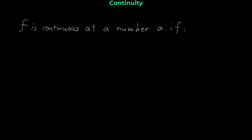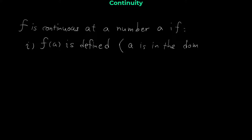We say function f is continuous at a number like a if f of a is defined. This means that the number a should be in the domain of the function f. So this is the first condition for continuity of a function at a point.